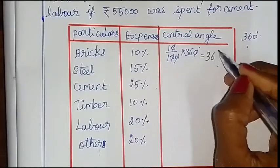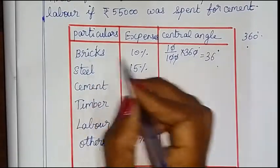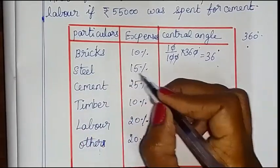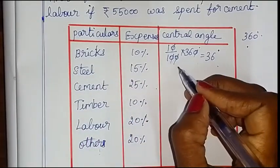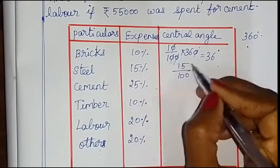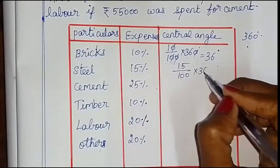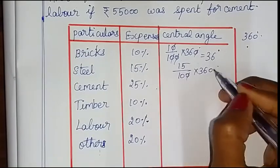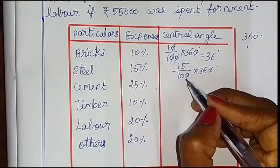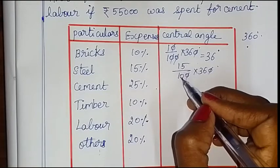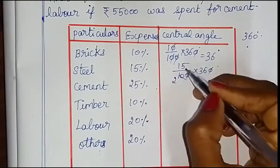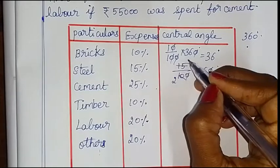We have to do the next column. In the next column, we have to calculate the central angle. For steel, the central angle: 15 by 100 into 360 degrees. So 15 into 360 degrees — 5 twos are 10, 5 threes are 15.